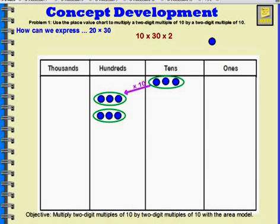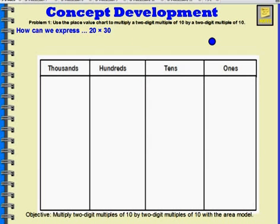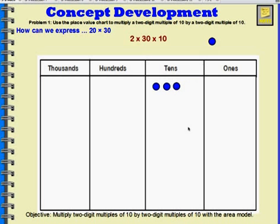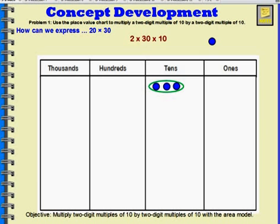Let's look at it yet another way. This time I'm going to break apart the 20 into 2 times 10, but we're going to do the 2 first. We're still going to represent 30 with 3 tens: 1, 2, 3. So I have 3 tens that I need to multiply by 2. I'll create a group of 3 tens and multiply it by 2, ending up with 2 copies instead of just 1. So now I have 6 tens.